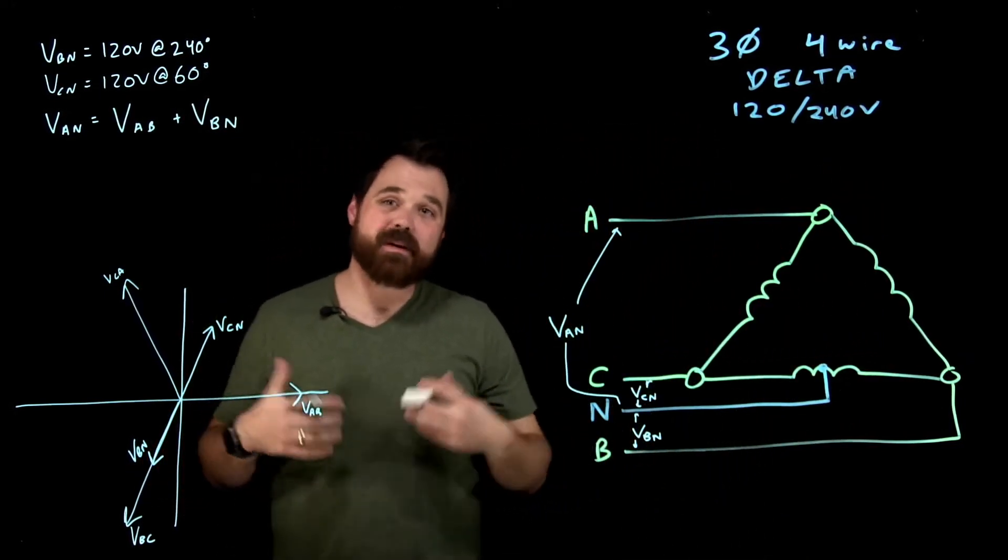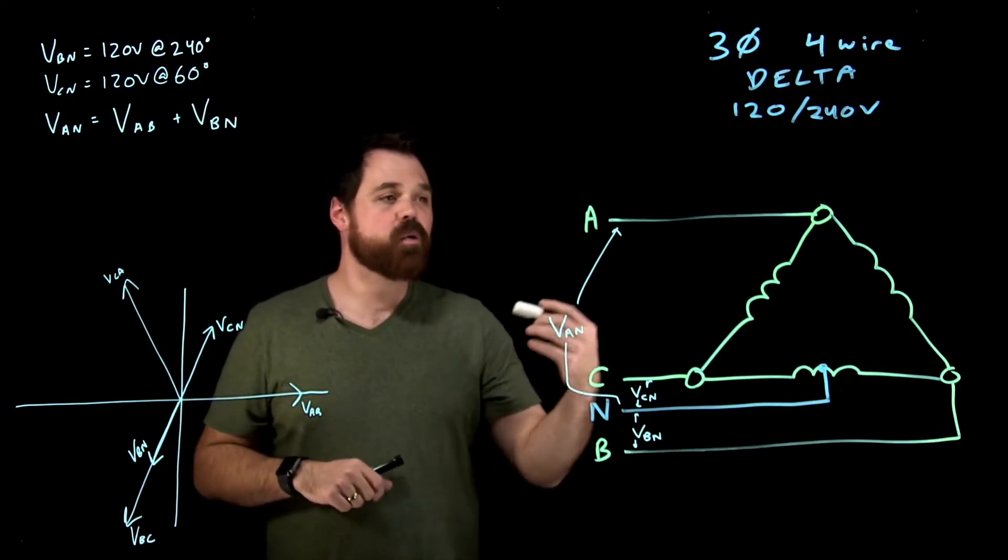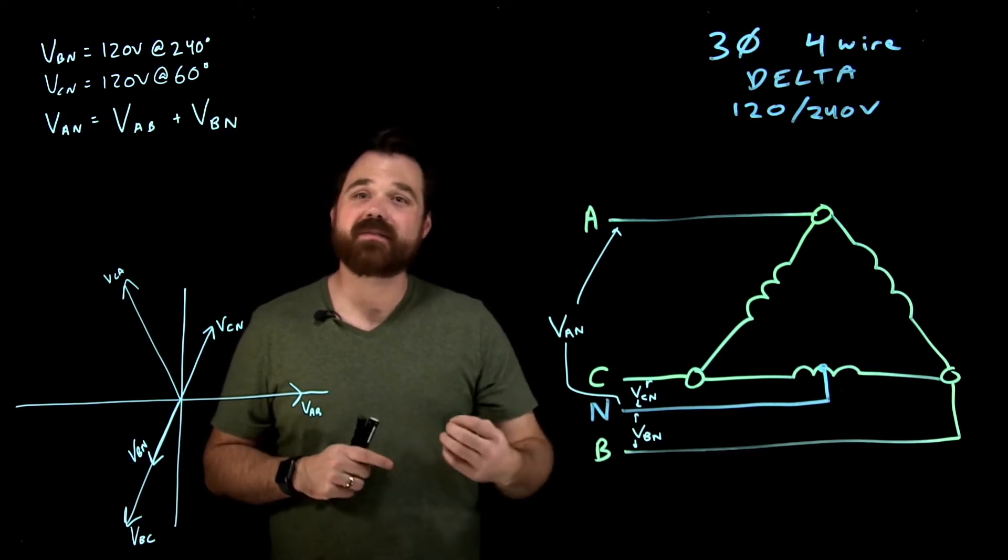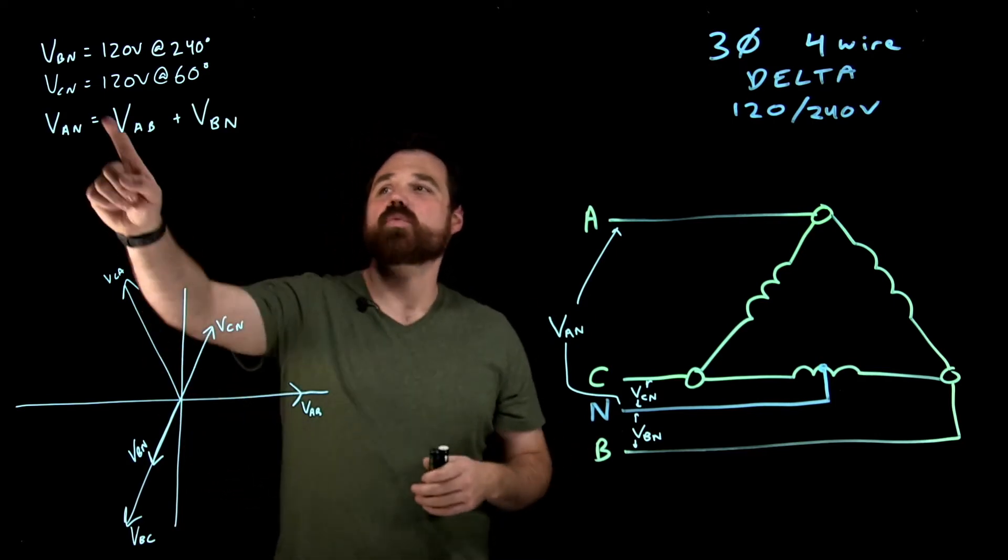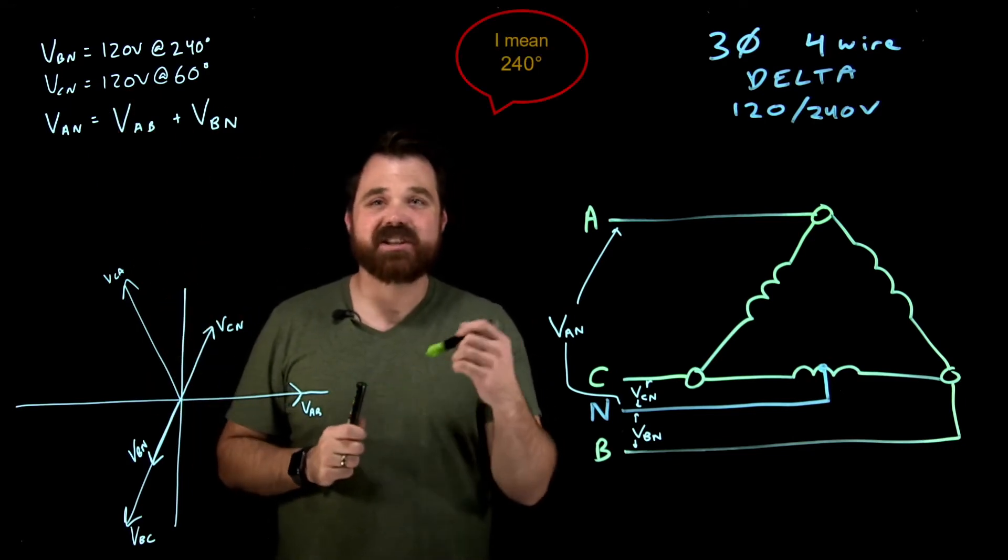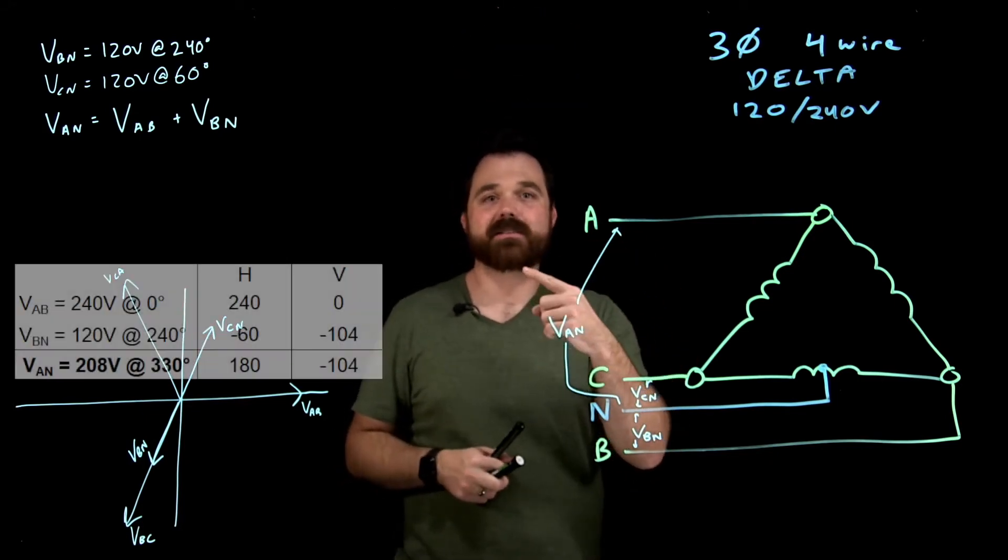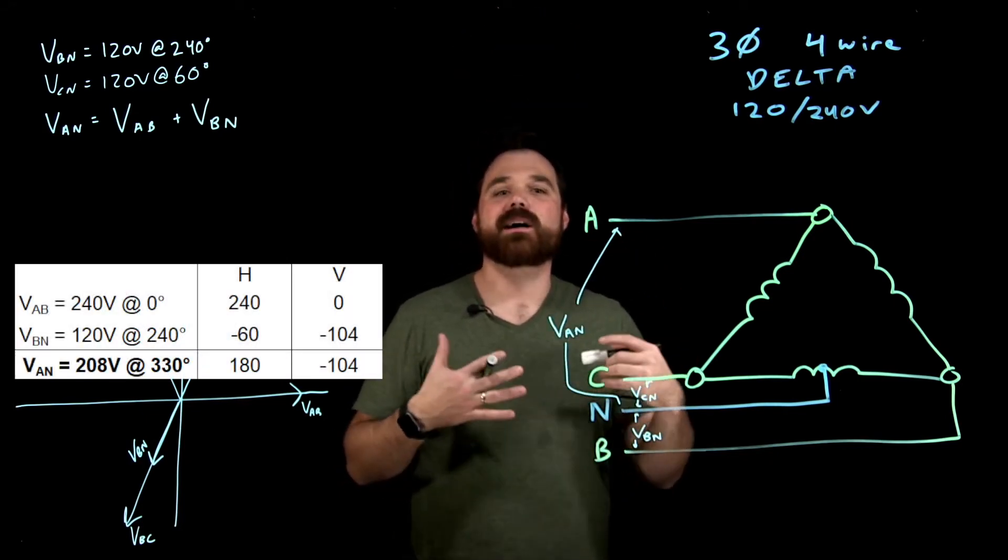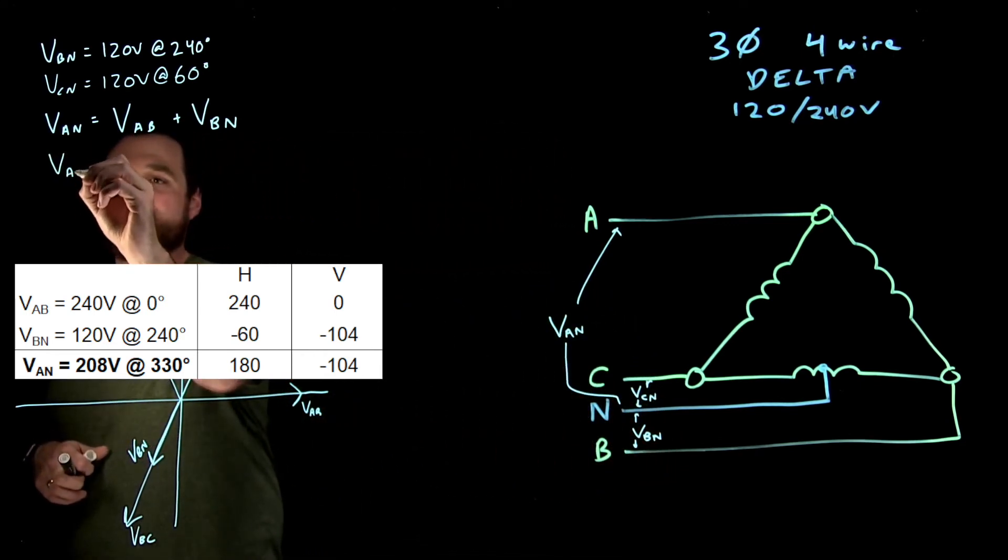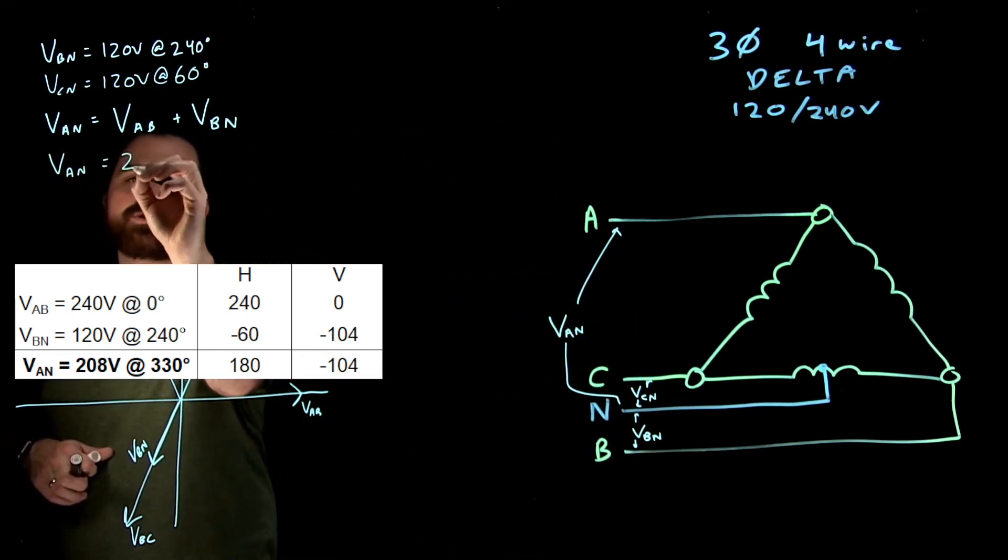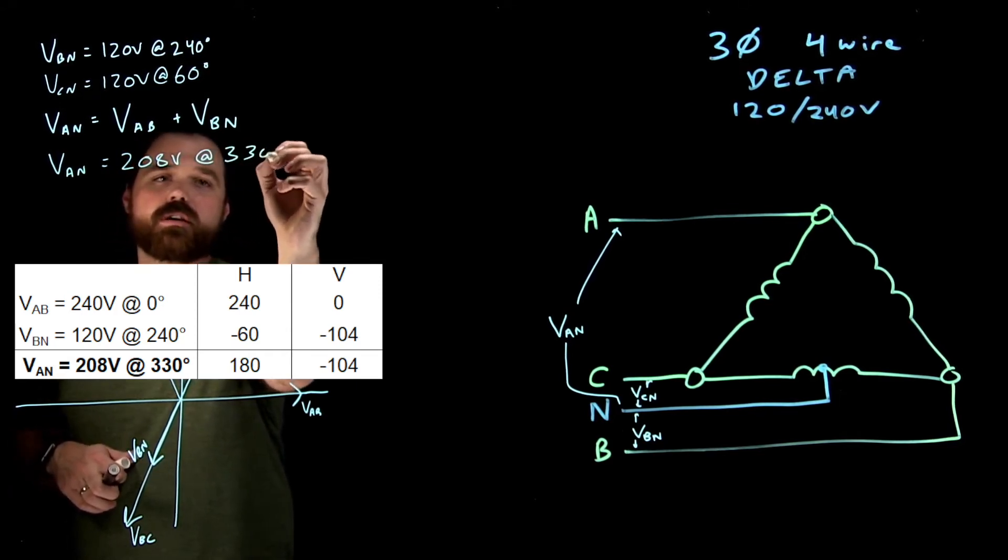Now we would add those up vectorally, meaning we would probably use an HV chart. So A to B was 240 volts at zero degrees, plus B to N, which is 120 volts at 60 degrees. So we would end up getting an HV chart that would look something like this. We add those up and we end up seeing that our VAN equals 208 volts at 330 degrees.